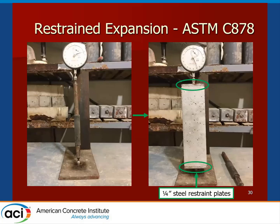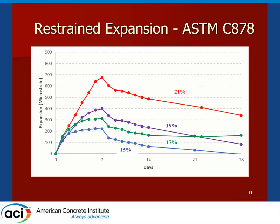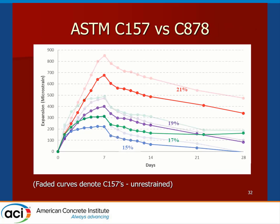For restrained expansion, the test was done in the same way. The only difference is the threaded rod embedded in the specimen that ties together one-quarter-inch restraint plates at either end per the ASTM. Again, we see this trend of increasing peak expansion as the percent component is increased. For a direct comparison between ASTM C157 and C878 unrestrained and restrained expansion, the unrestrained specimens show a higher peak expansion in general at any given point in time compared to the restrained counterparts.